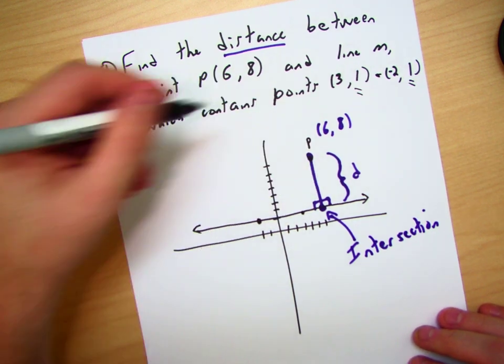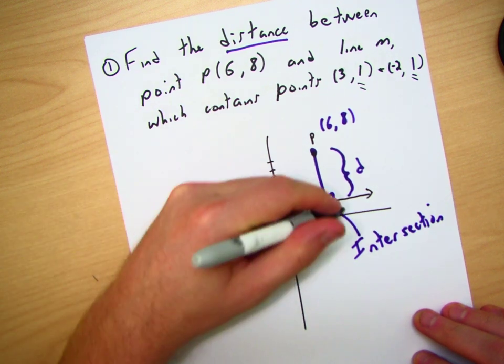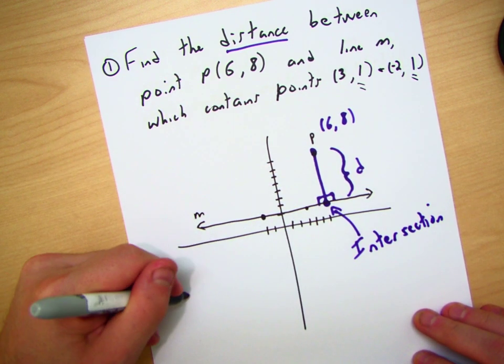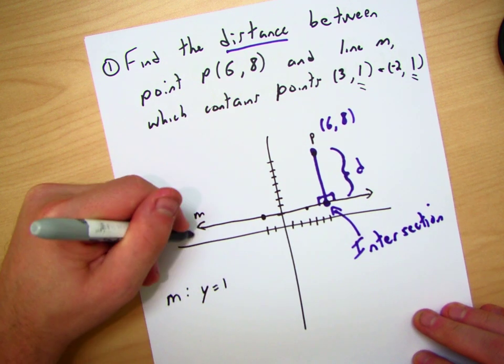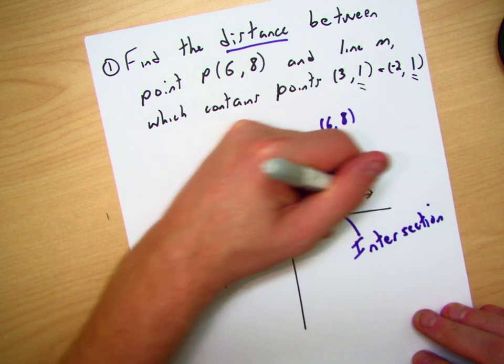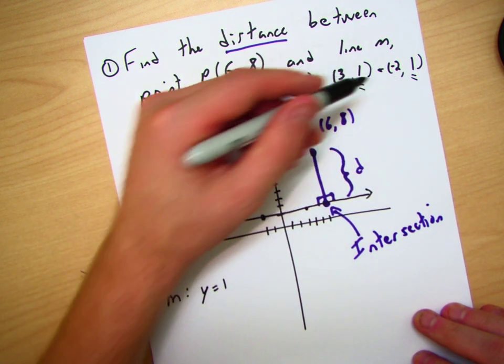Well, the equation, okay, for line M, and that's this one right here. This is line M containing these two points. This equation is going to be Y = 1 because it's always 1. Horizontal lines always have the equation Y equal to something. And in this case, it's going to be 1.